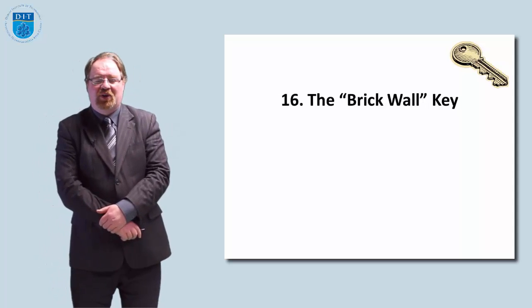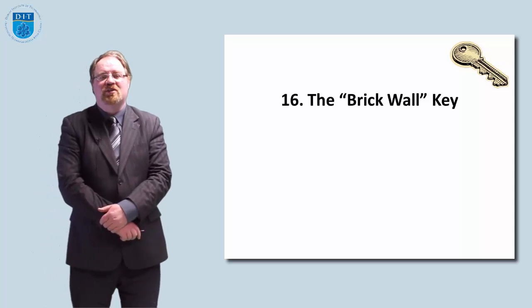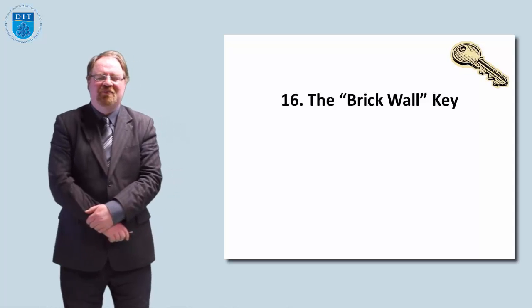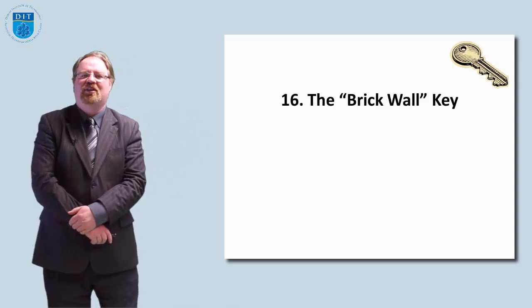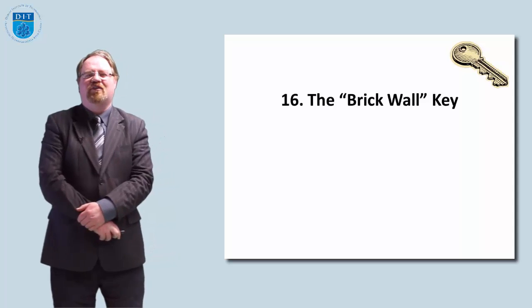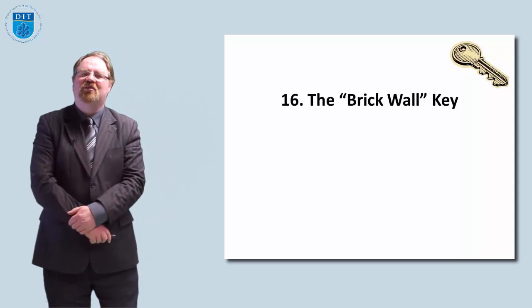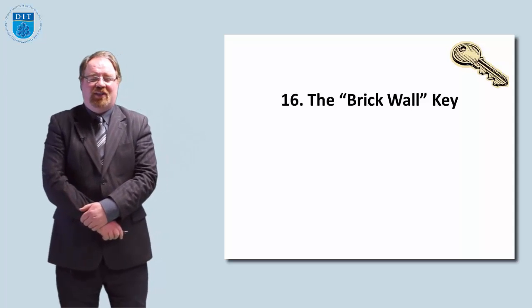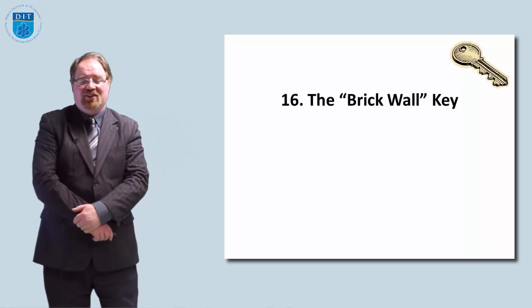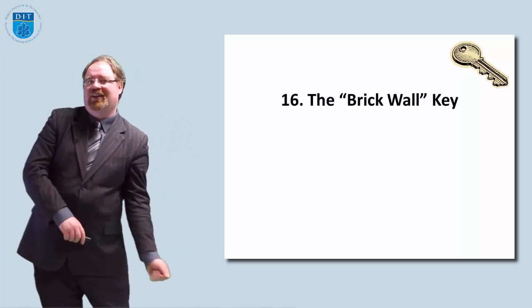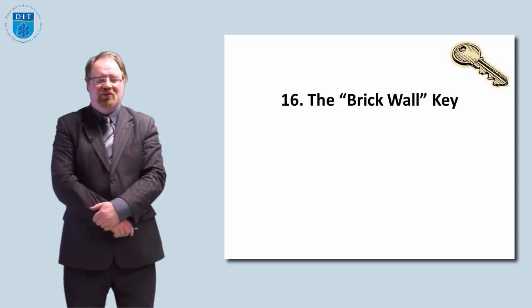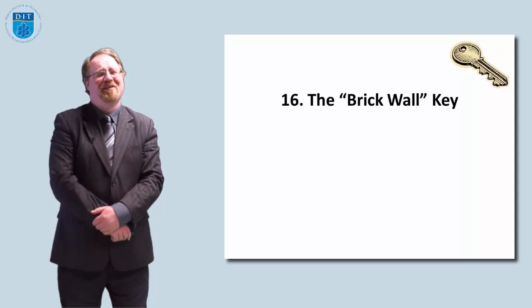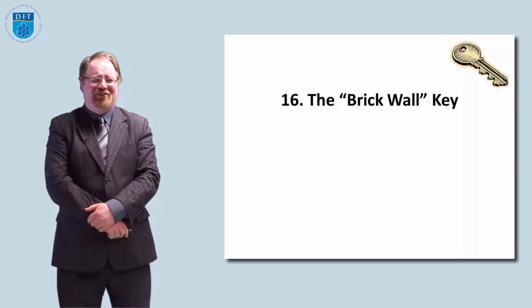The next technique is number 16 — it's called the brick wall key. Say something that's completely indisputable and then argue about it. So let's say: what goes up must come down. Think of as many arguments as to when that statement is wrong. Not in outer space. If it goes up but gets stuck, it won't come down. If the thing is lighter than air, it probably won't come down for a good while. And one thing that doesn't come down is taxes.